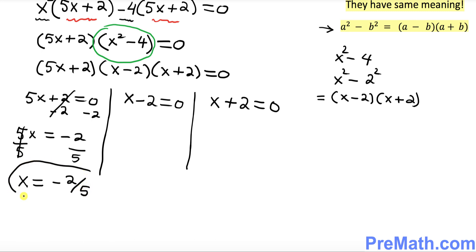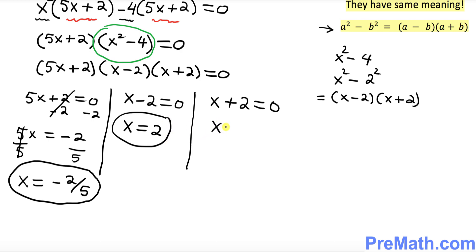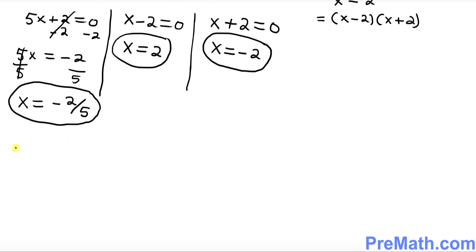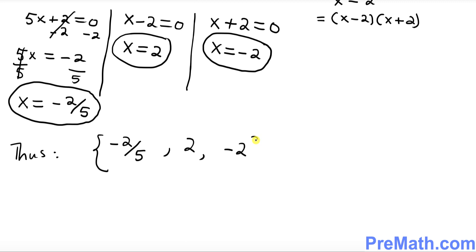So that is one of our solutions. From x minus 2 equals 0, we get x equals positive 2. From x plus 2 equals 0, we get x equals negative 2. Thus we got our three solutions, and the solution set is simply: negative 2 fifths, 2, and negative 2.